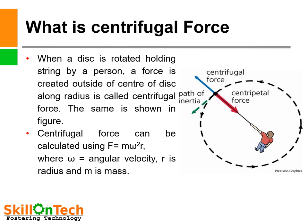The force which acts along the radius towards the center is called centripetal force. Centrifugal force can be calculated using the formula: F = mω²r, which is mass into acceleration, where omega (ω) is the angular velocity, r is the radius, and m is the mass.